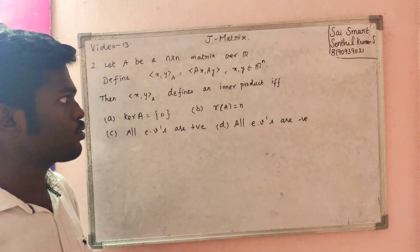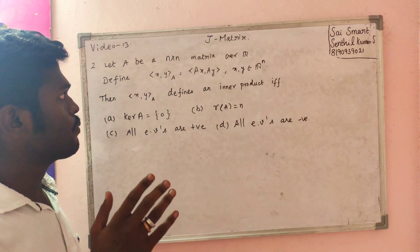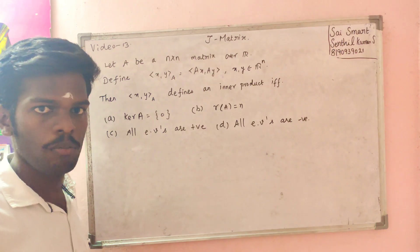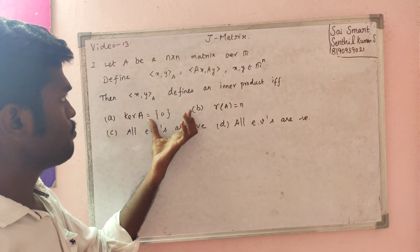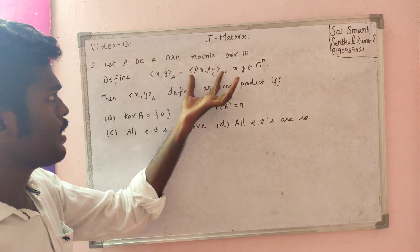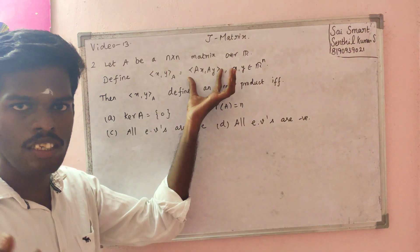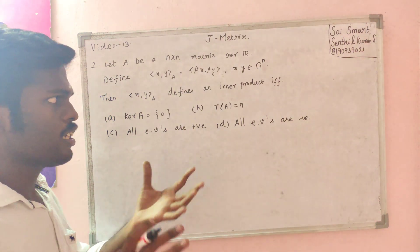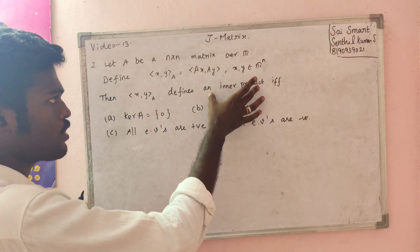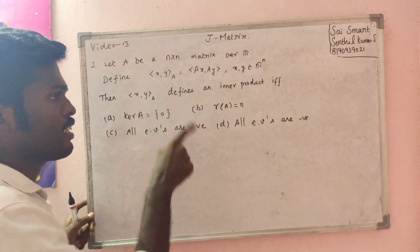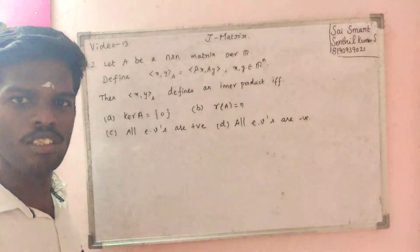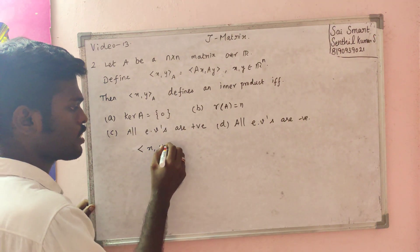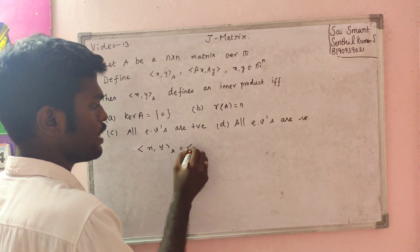We need to find what type of matrix A is. We need to check whether the inner product ⟨x, y⟩_A is valid. If the inner product condition is satisfied, then A is determined. The matrix must satisfy: ⟨x, y⟩ = ⟨Ax, Ay⟩.